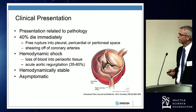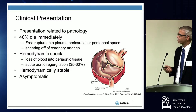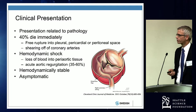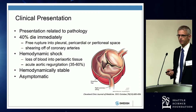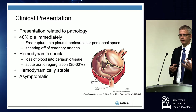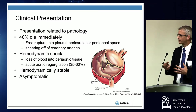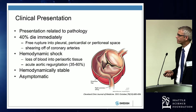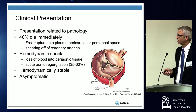The clinical presentation is not unlike King George II, not unlike this patient. Forty percent of patients die immediately, because there's free rupture into a space or shearing off of the coronary artery — either the pleural space or the pericardial space, compressing the heart, not allowing it to fill, and then it can't pump. Or patients can go into hemodynamic shock from loss of blood into the periaortic tissues.